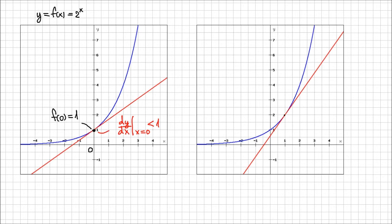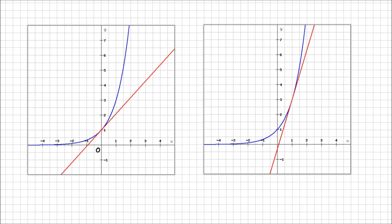Let's see what happens when x equals 1, if the same relation maintains. I can calculate f of 1 to be 2, while the derivative — the slope of the tangent when x is 1, dy/dx at x equals 1 — is less than 2. From the graph we can estimate it's about 1.4, but that doesn't really matter how much it is as long as it's less than the value of the function. That's all I want to determine for now. Since the function 2^x seems to have a derivative that is less than the values of the function at those points, let me take another function: 3^x.